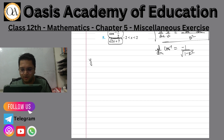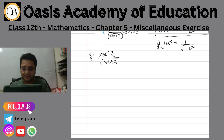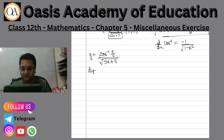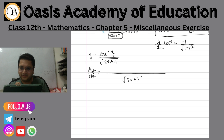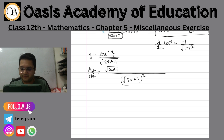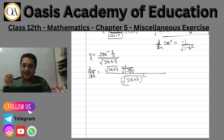So y is equal to cos inverse x by 2 divided by under root 2x plus 7. Ultimately dy by dx — applying the quotient rule — I keep under root 2x plus 7 constant in the denominator, and for the numerator I differentiate cos inverse x by 2, which gives minus 1 upon under root 1 minus x by 2 whole square, then multiplied by the differentiation of x by 2, which is 1 by 2.